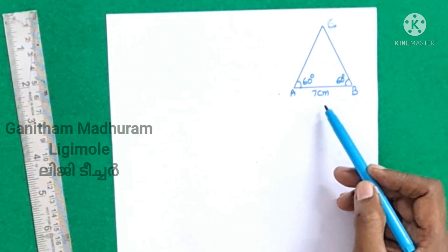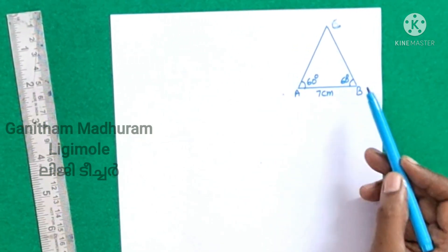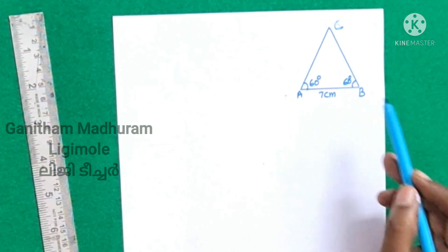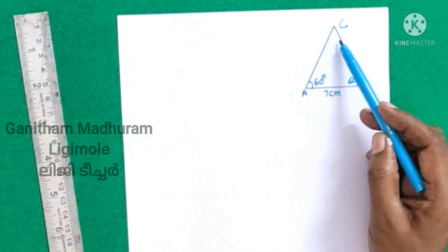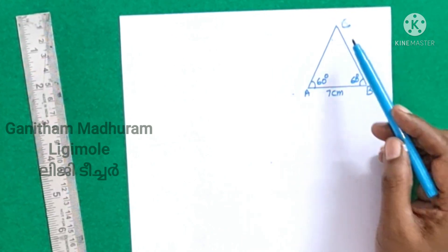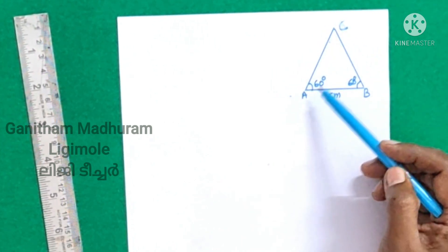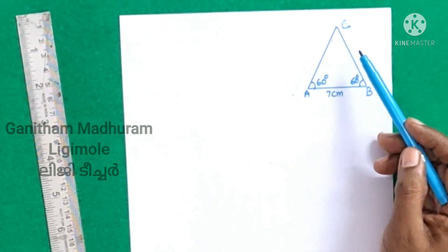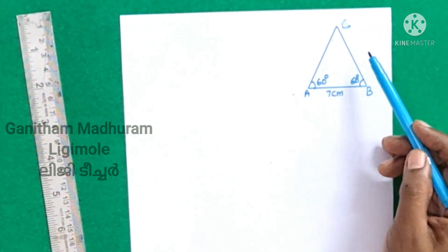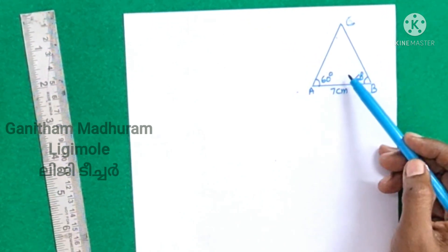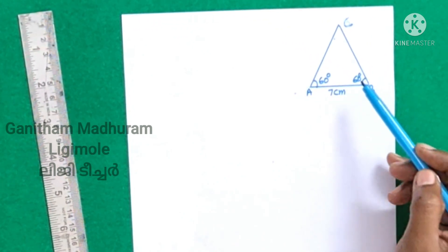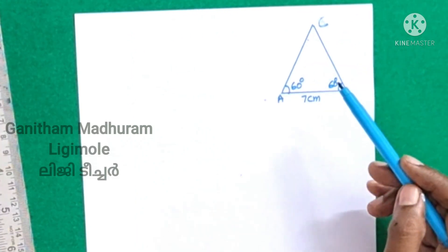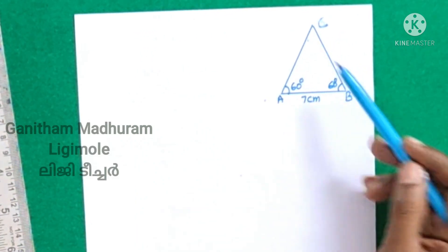This is a triangle L. AB is 7 cm. We have to draw triangle L. In this picture we can draw it with BC, CA. In the textbook, I will draw triangle ABC with AB 7 cm, angle A 60 degrees and angle B 60 degrees. How much is angle C? Measure the length of BC and CA.